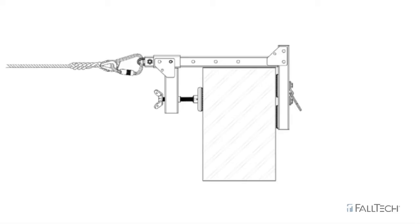This anchor installs on structurally sound parapet walls between one-half inch and fifteen inches thick and requires a minimum parapet height of nine inches.